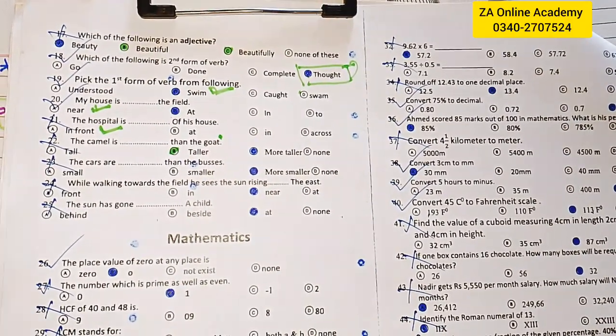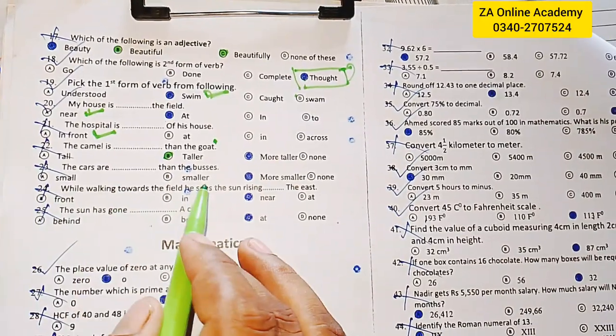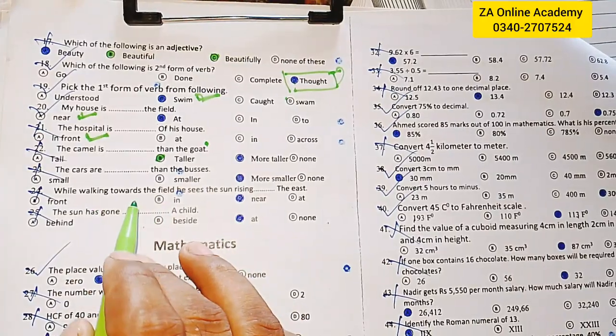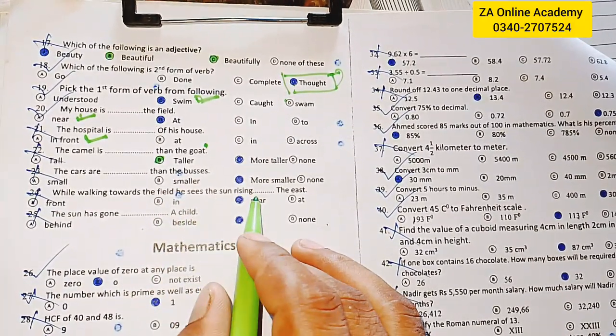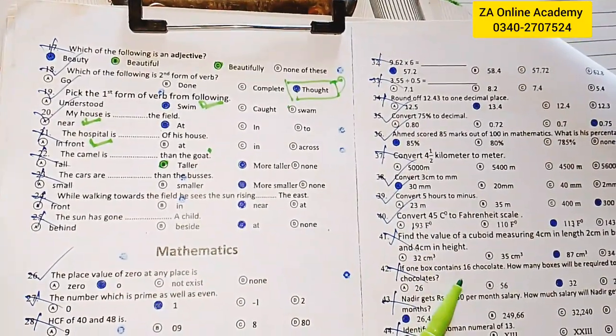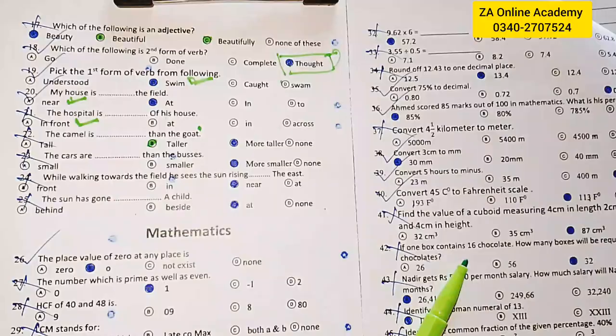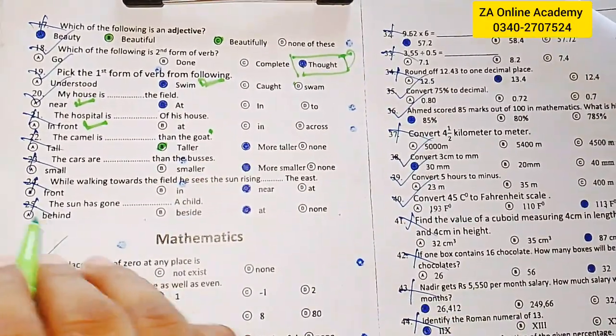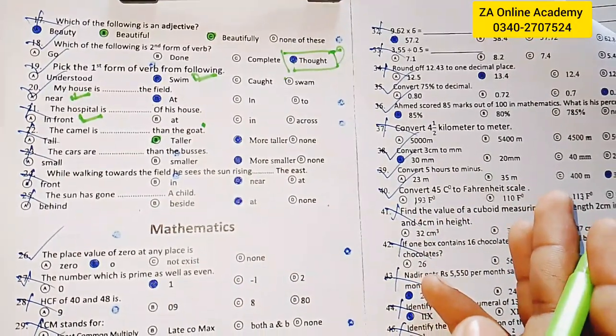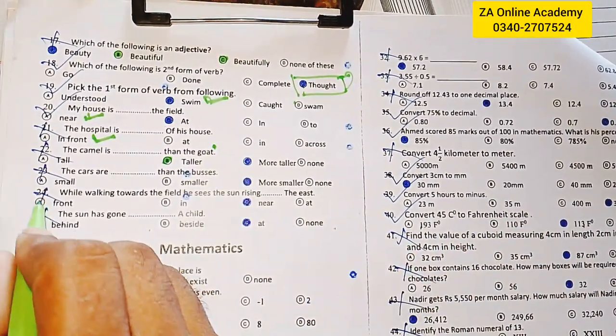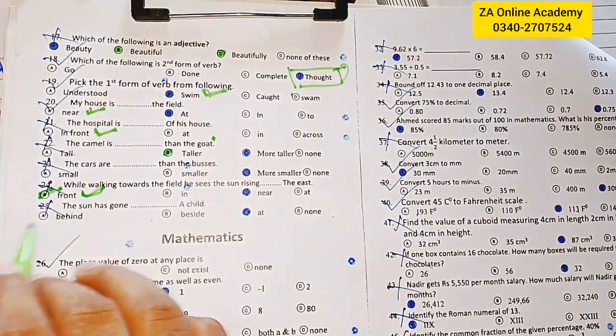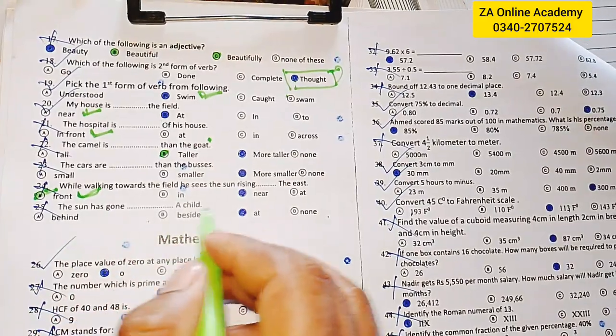While walking towards the field, he sees the sun rising. This is east. The sun has gone, this indicates time.